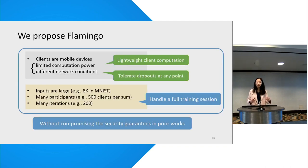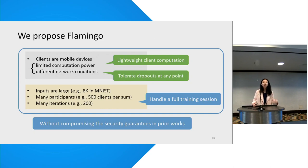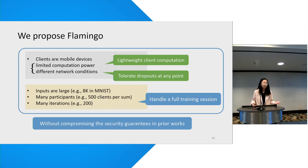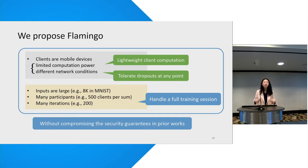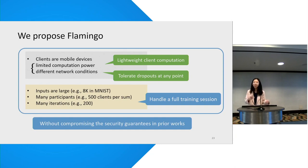So we propose Flamingo, which fits all these efficiency needs while preserving the security that people achieved in prior work. In particular, having fewer round trips allows us to scale to an entire training session, and clients in our system only need to be online for one specific step to have their inputs included, so we essentially eliminate the bias as much as possible.